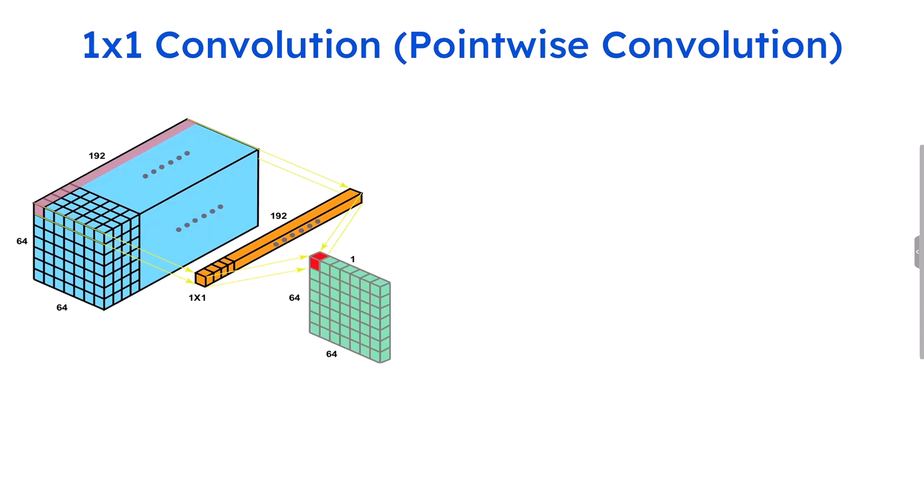Let's get started with 1x1 convolution, also known as point-wise convolution. This 1x1 convolution filter is a type of filter used in convolutional neural networks for image processing and computer vision applications.